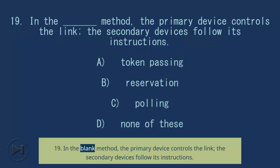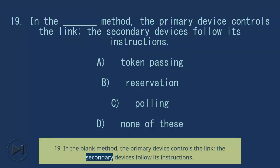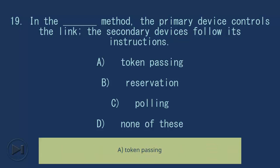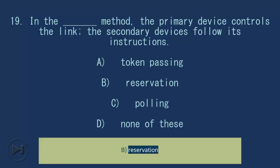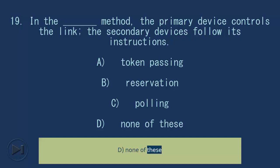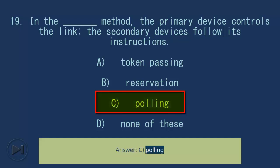Question 19: In the blank method, the primary device controls the link and the secondary devices follow its instructions. A) Token Passing, B) Reservation, C) Polling, D) None of these. Answer: C) Polling.